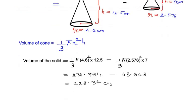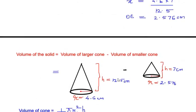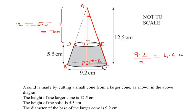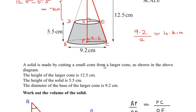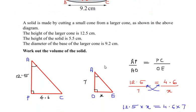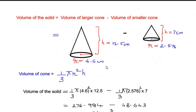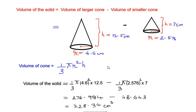So 228.34 cubic centimeters is the volume of the solid. I hope you understood all the steps and liked the video. If you are enjoying my videos, please like, share, and subscribe to my channel. If you know another way of solving this example, do comment below — thanks for watching!